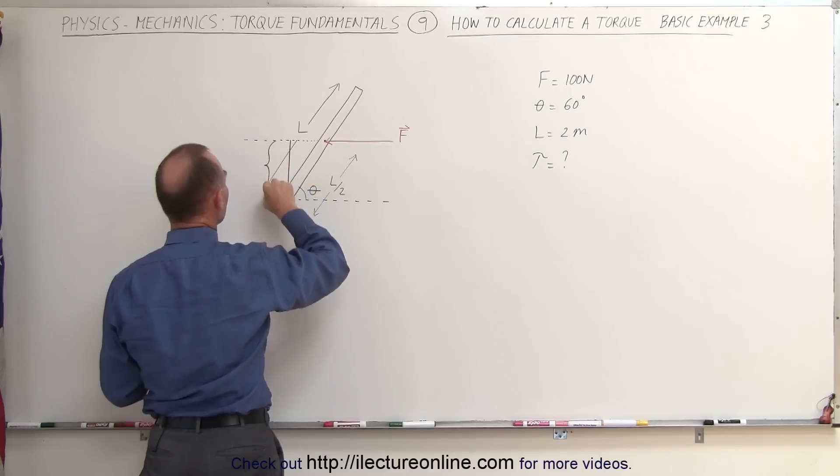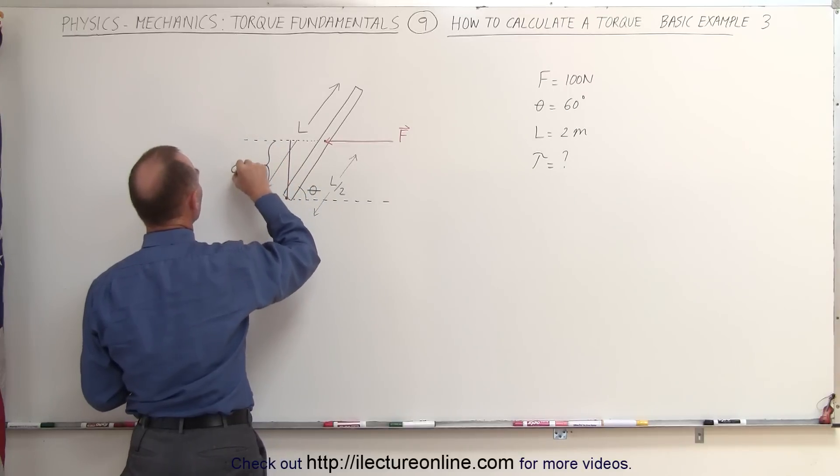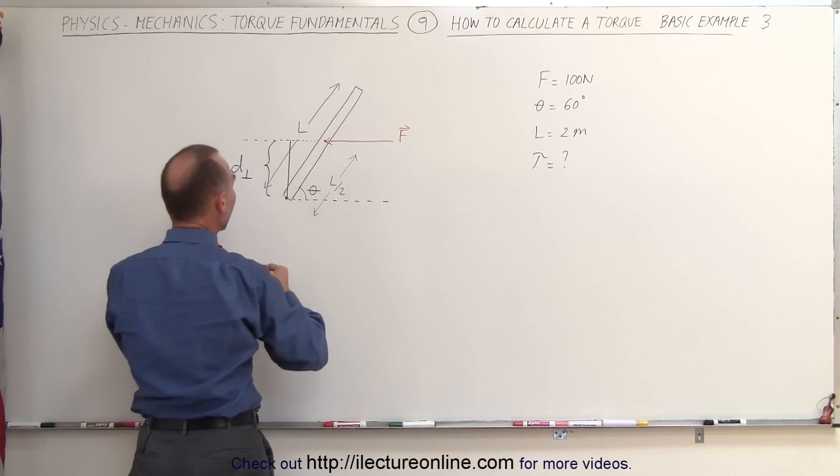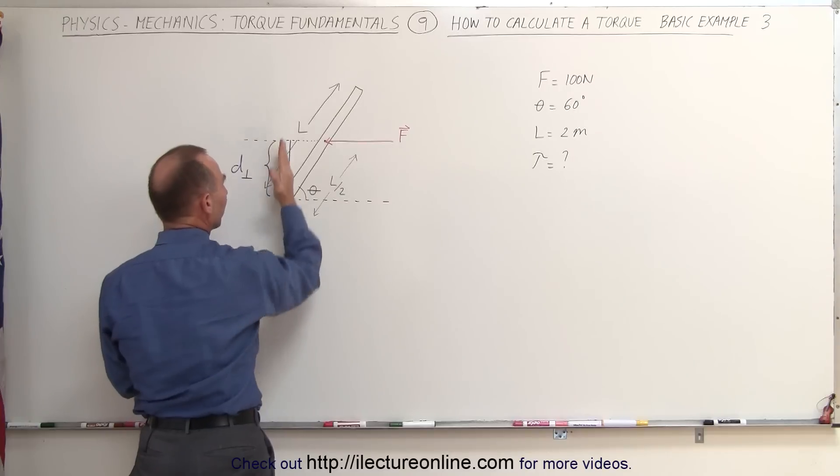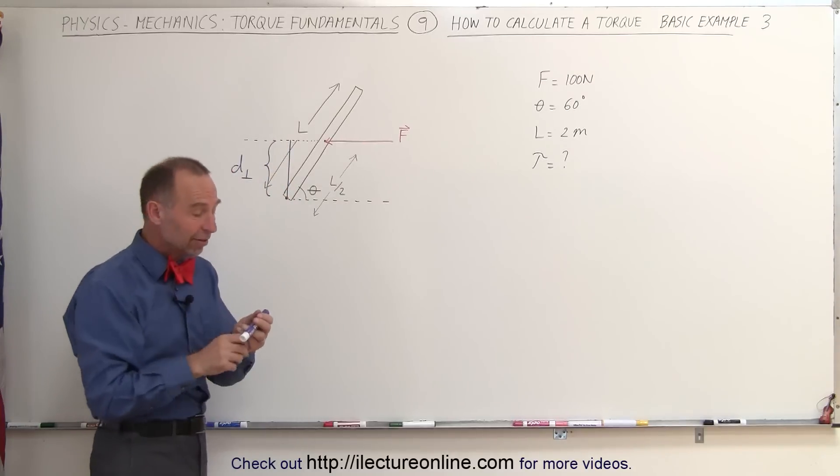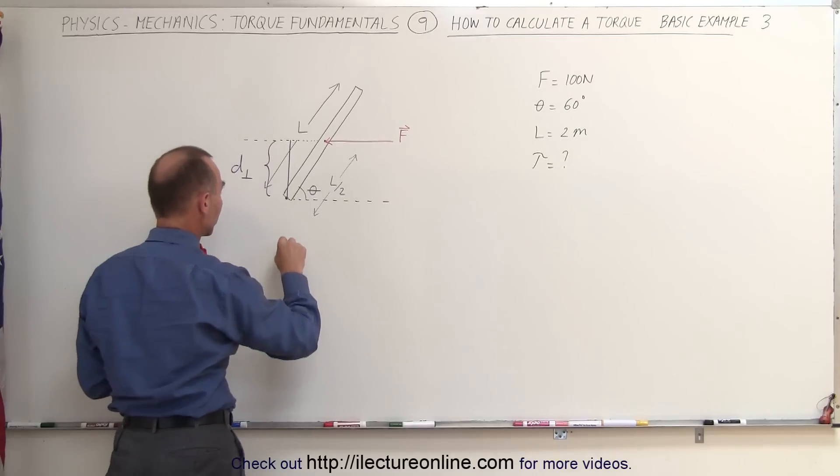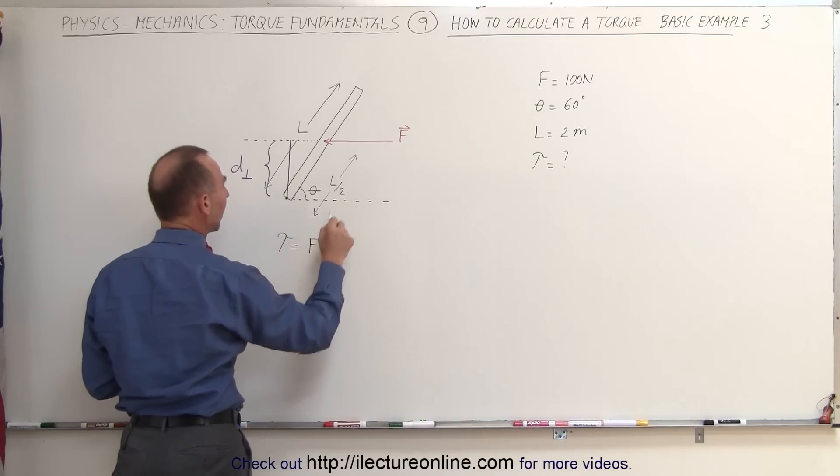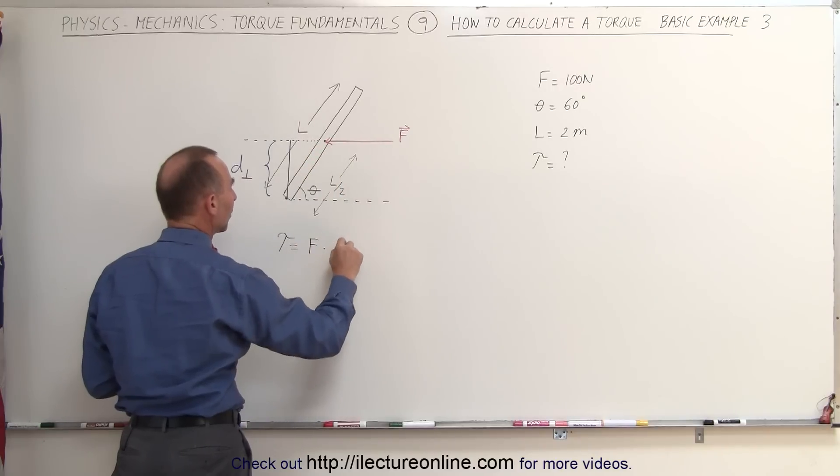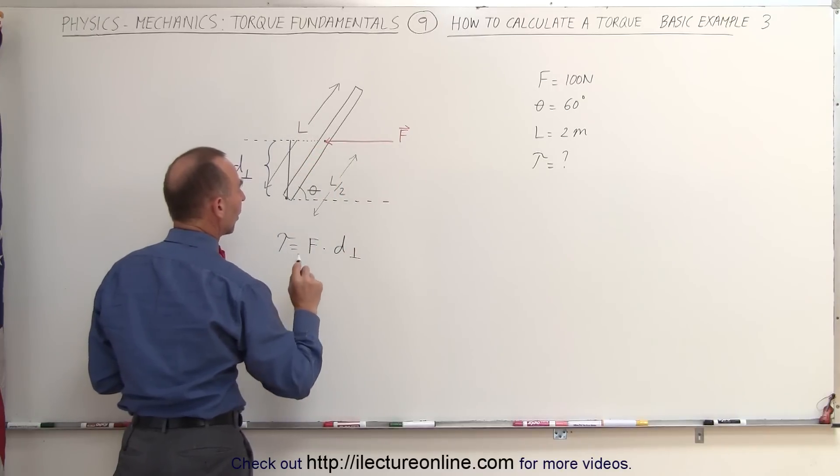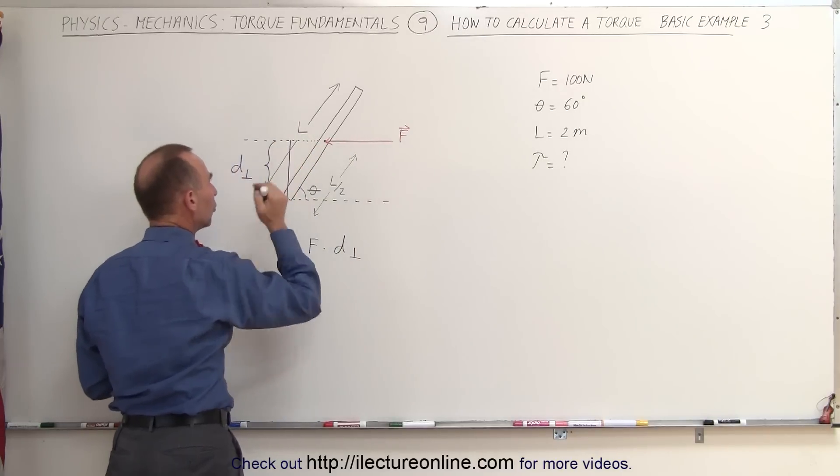This distance right here could be considered the perpendicular distance from the line of action of the force to the pivot point. Which means we can easily find the torque by writing the following equation. The torque is equal to the force applied to the beam times the perpendicular distance from the line of action of force to the pivot point.